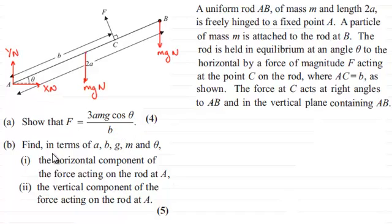Now, for this part of the question, we're asked to find in terms of a, b, g, m and theta, the horizontal component of the force acting on the rod at A, in other words x newtons, and the vertical component of the force acting on the rod at A, in other words y newtons. And this is worth 5 marks.